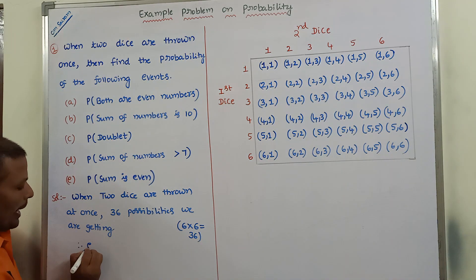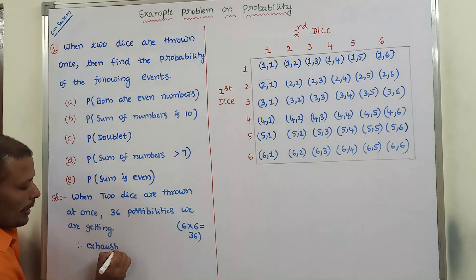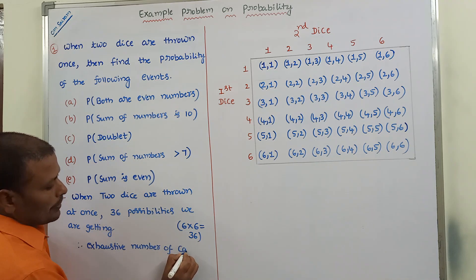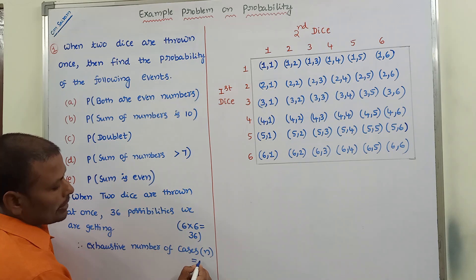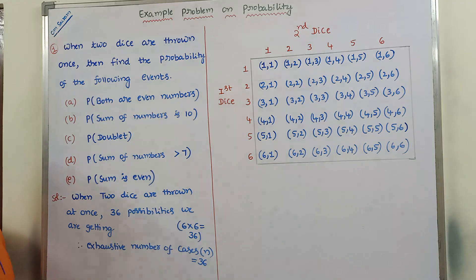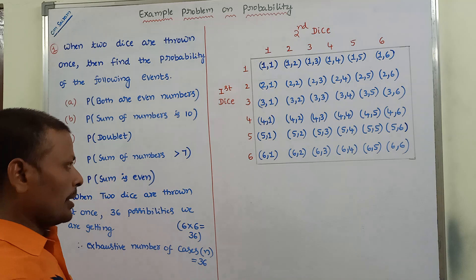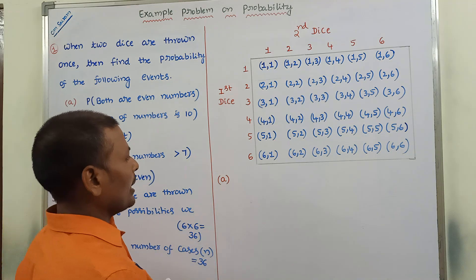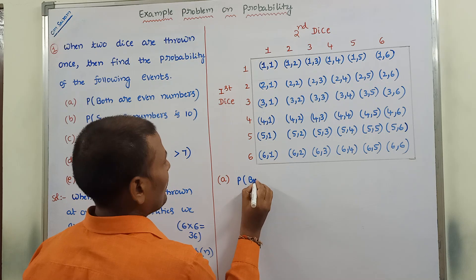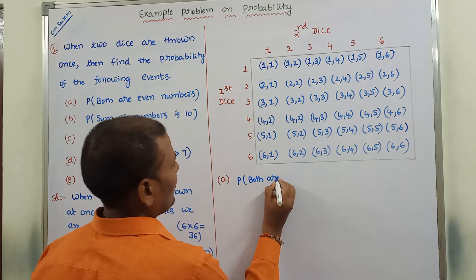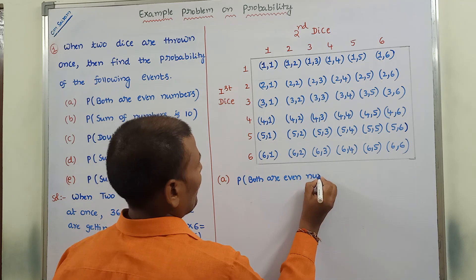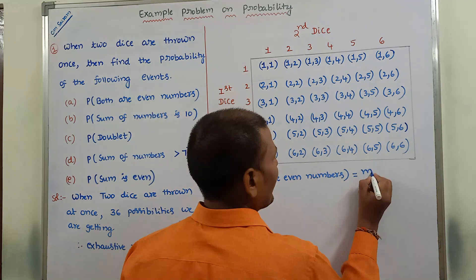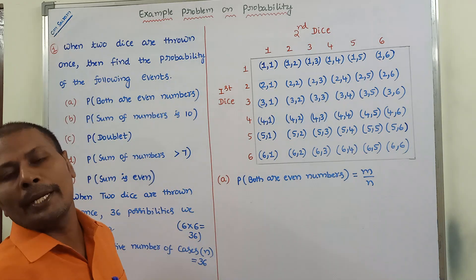Therefore the exhaustive number of cases, represented by n, is equal to 36. Now we can go for Bit A: probability of getting both even numbers. The probability of an event is equal to m by n, where m is the favorable number of cases.